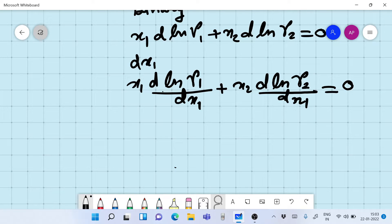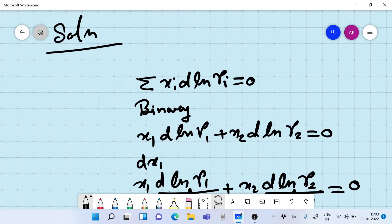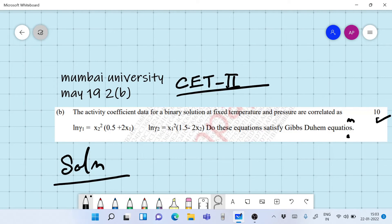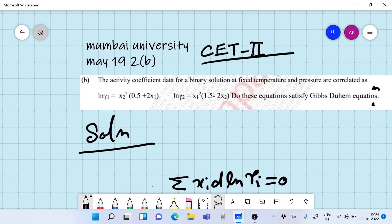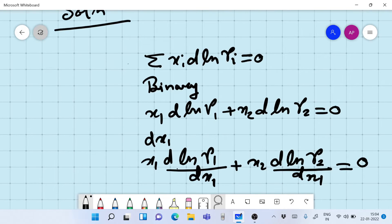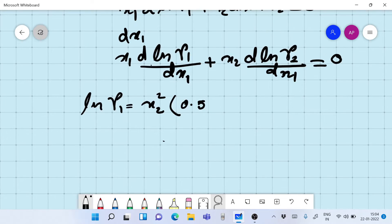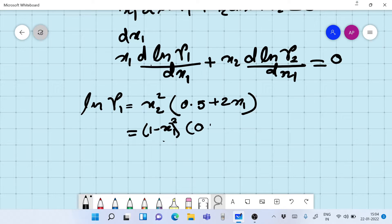Now we have to find out what is d ln gamma 1 by dx1. Okay, so we have ln gamma 1 given as x2 square times 0.5 plus 2x1. So we have ln gamma 1 as x2 square 0.5 plus 2x1. The first step is writing everything in terms of x1.